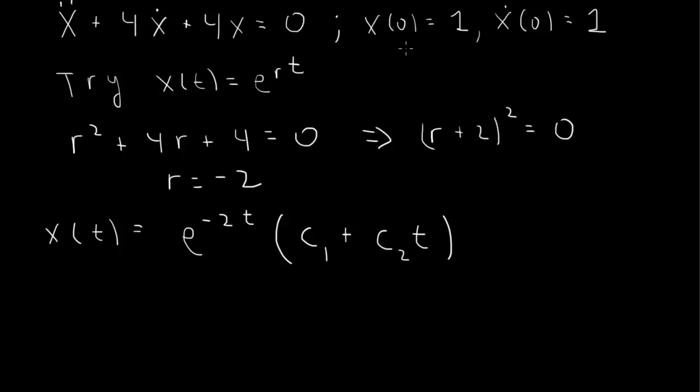We have an initial value problem, so we need x of 0 and x dot of 0. So we should take the derivative here, so x of t.